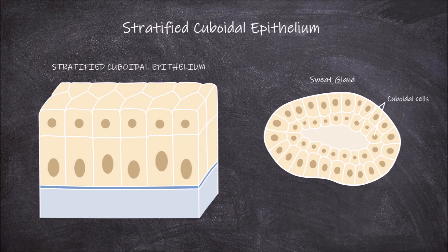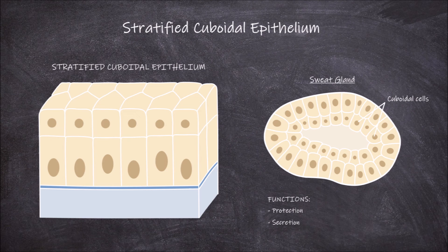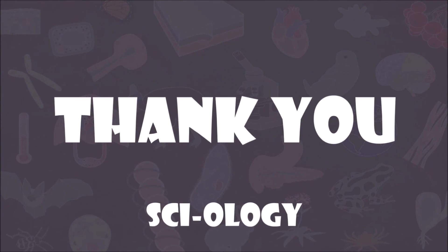All types of epithelium function in providing a layer of protection for the structures and tissues underneath. They also function in secretion. And that concludes this video on stratified cuboidal epithelium. Thank you for watching.